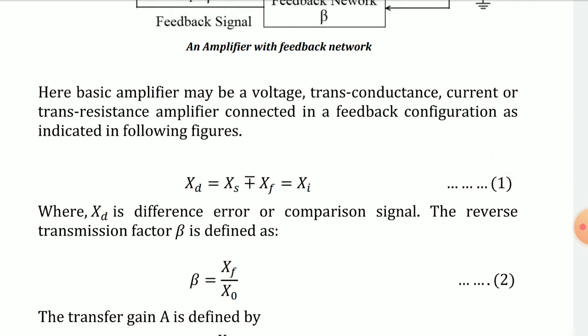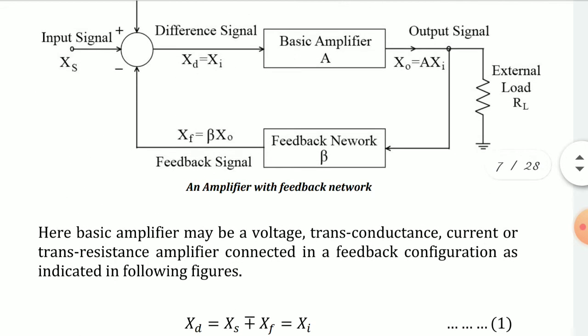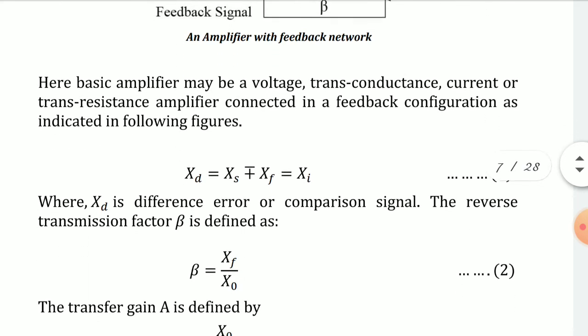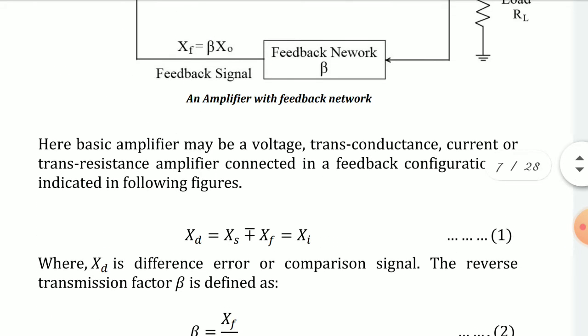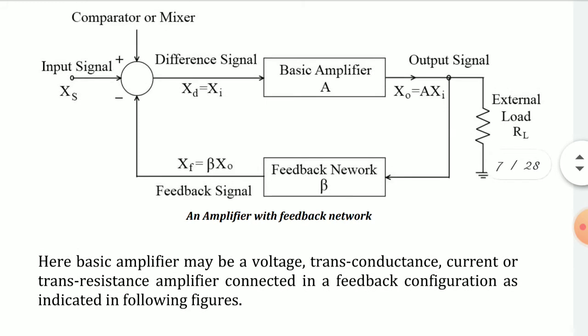The transfer gain A is the gain of the basic amplifier. The amplifier output is X_O and the input is X_I, so A is given as X_O divided by X_I. Mark this as Equation 3. We now have all three equations based on the block diagram.